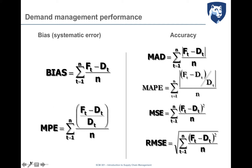Bias is measured by the average of the error with sign — the difference between the forecast in period T and the demand in period T, for all periods of interest, divided by N, the total number of periods. This can also be expressed as a percentage — the mean percentage error — by making the ratio with the total value of the demand in each period.